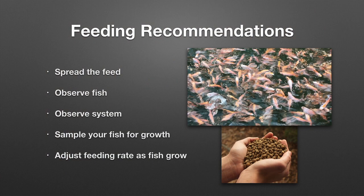Some recommendations when feeding: first, spread the feed evenly around the surface area of the water. If you put feed in one corner, you don't get time to observe the fish, and more aggressive fish eat more. Secondly, observe your fish. Thirdly, observe your system. You also need to sample your fish every three to four weeks to assess growth and adjust feeding rates. It's okay to sample maybe 10 to 20 fish, take their weight, and calculate biomass from that sample.